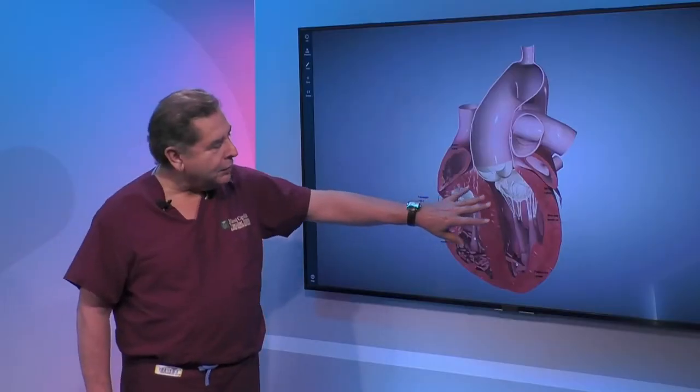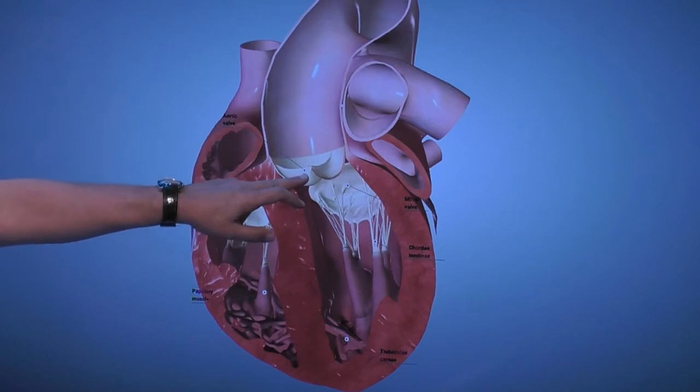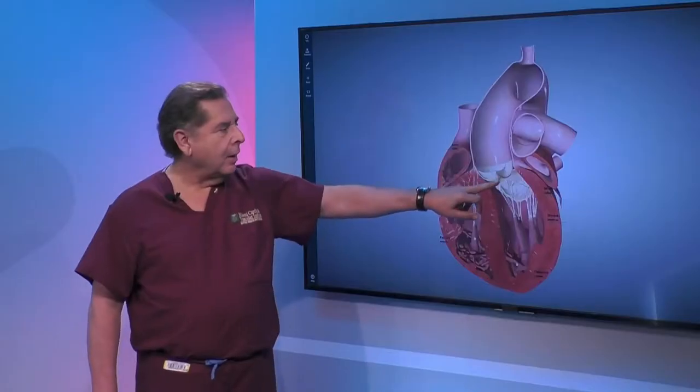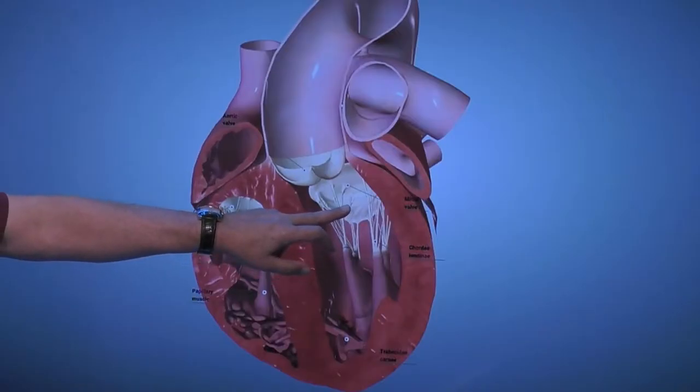Now as we get into speaking about valve disease, what are some of the things that can go wrong with the valves in the heart? As the heart gets older, mostly the aortic valve can get calcified and can get obstructed, and we call that stenosis. They also can leak. Like the mitral valve can also get obstructed, and then we call that mitral stenosis.